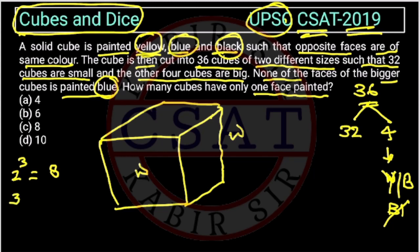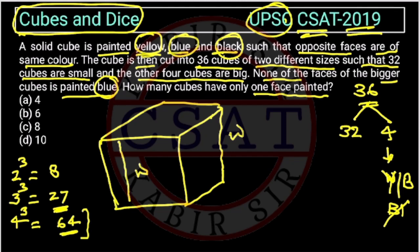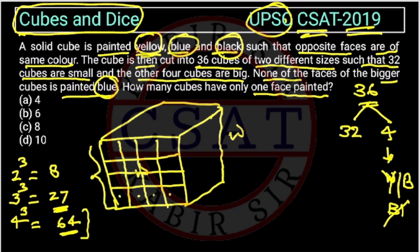If we take two cuts on each side, we will get 27 cubes, but we are having more than 27. With three cuts on each side we get 64 cubes, which is more. So we will consider 3 cuts — this gives us two layers of 16 small cubes each, totalling 32 small cubes. The other 4 will be the bigger cubes.